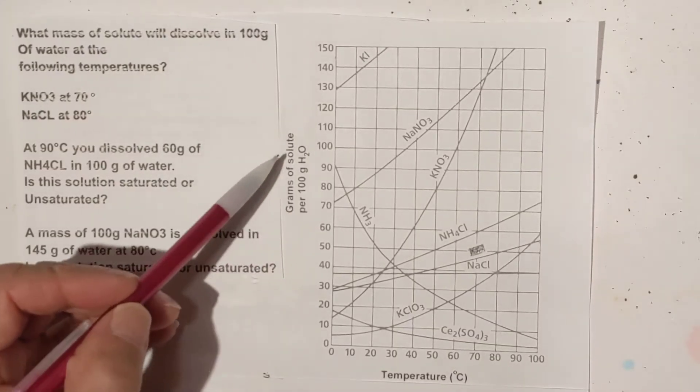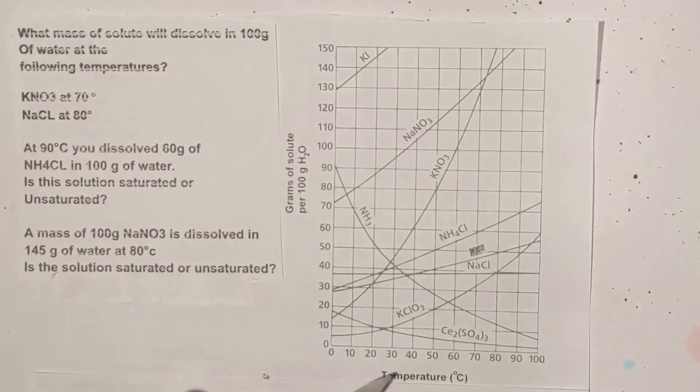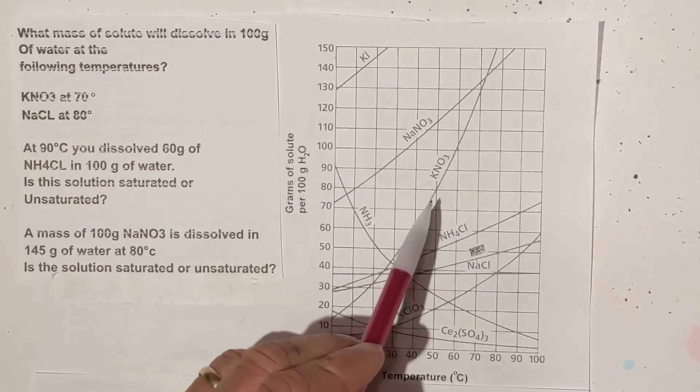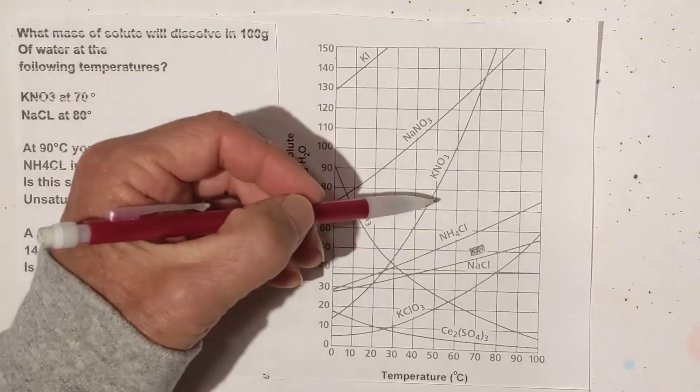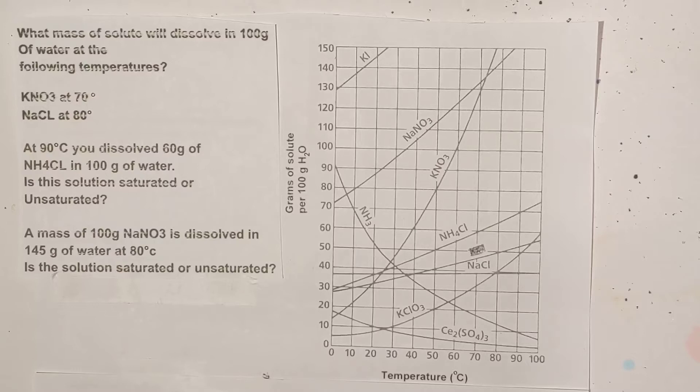Over here you have the solute, the amount of the substance you're dissolving into it. Here is the temperature, and then this is your solubility curve. If you're on the line you're saturated, below the line you're unsaturated, and above you're supersaturated.